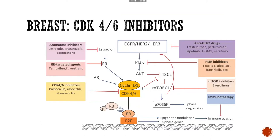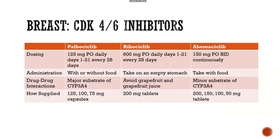Moving into breast cancer, which will be the last disease state I cover. There are a lot of different oral therapy options in breast cancer; I'll focus on CDK4/6 inhibitors because they are among the more common ones you'll encounter. There are three drugs: palbociclib, ribociclib, and abemaciclib. Palbociclib and ribociclib are both cyclic — patients take them days one through 21, then off for a week. Abemaciclib is continuous dosing, which can be a lot easier for patients. We're not a big ribociclib institution because of more cardiovascular concerns; you'll see more palbociclib or abemaciclib used in clinic.